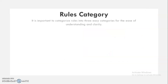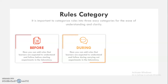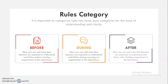This is how you can organize your rules for any science laboratory classroom. You can have three categories. The first one: before starting an experiment — here you add rules that learners are expected to understand and follow before starting experiments. The third category: after finishing their experiments — here you can add rules that learners are expected to understand and follow after finishing experiments in the laboratory.